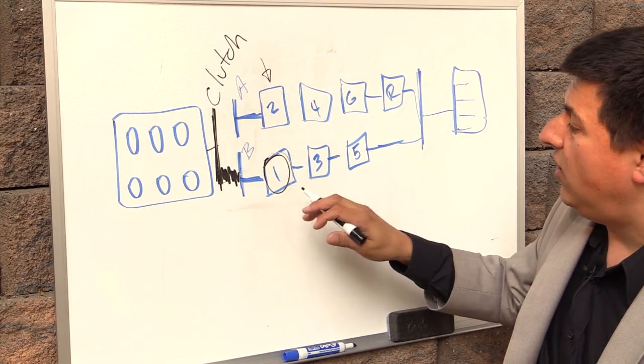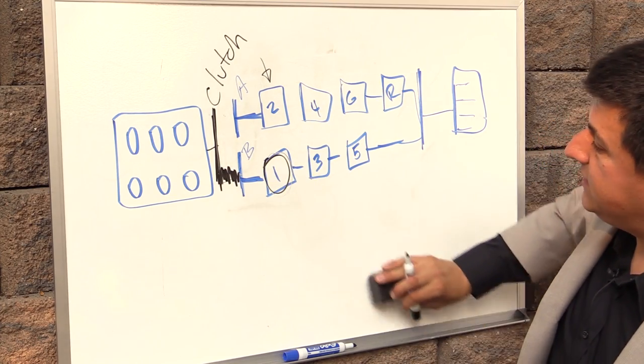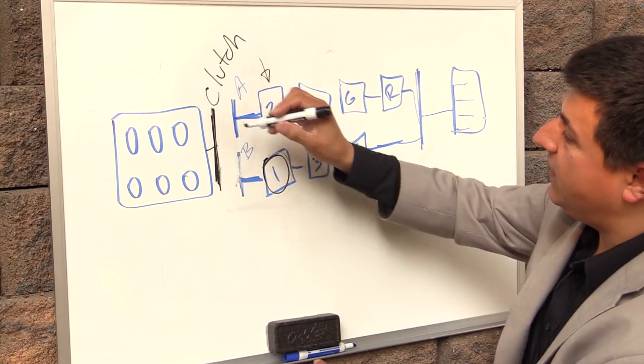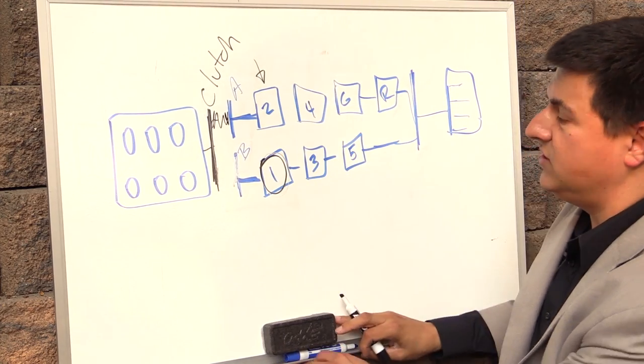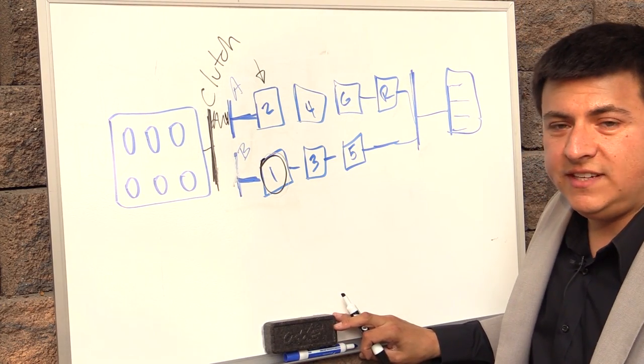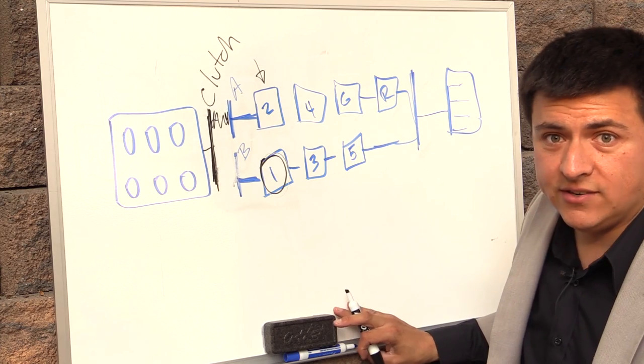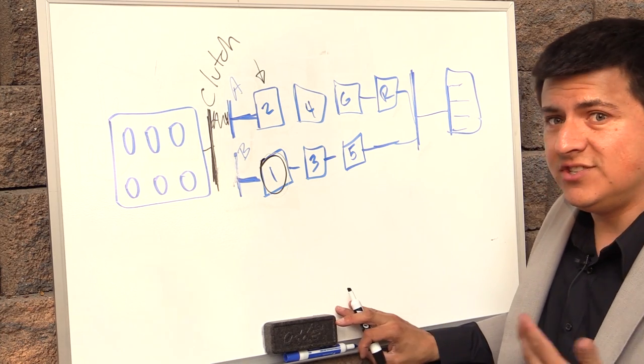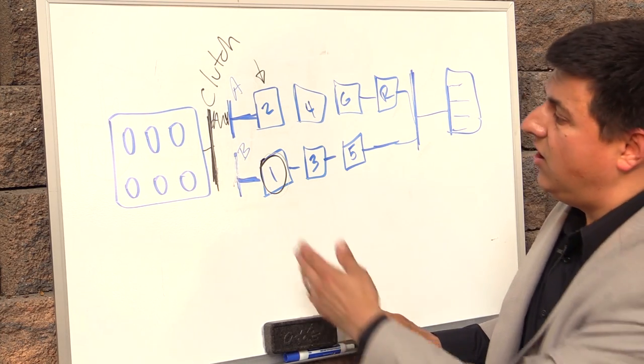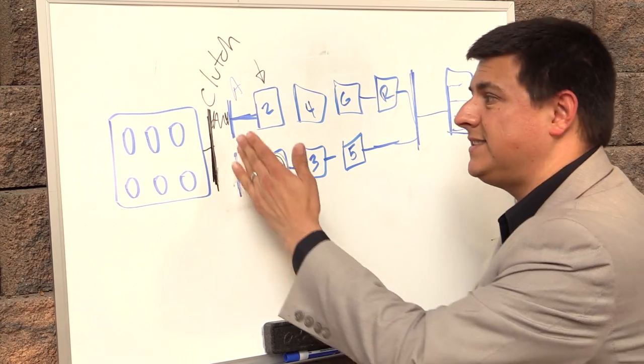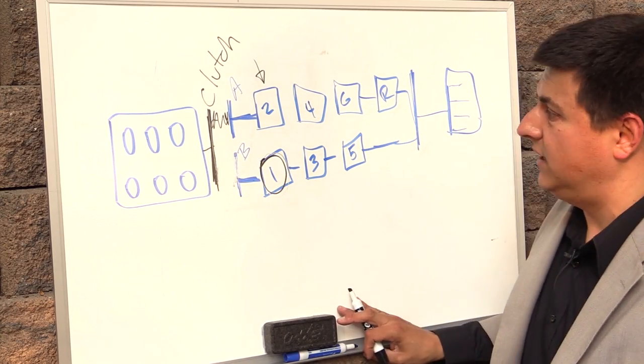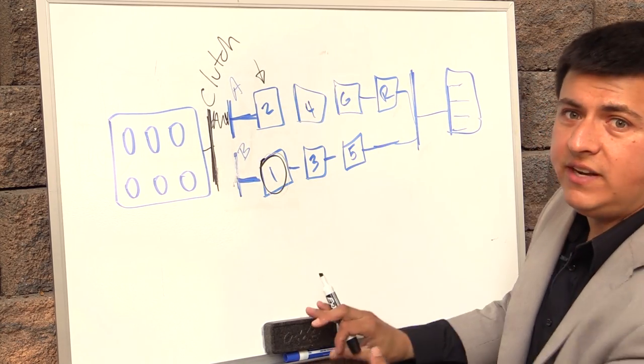So if we want second, all we have to do is disengage this clutch right here and then very quickly engage this clutch. That leaves all of the shifting to be done at a time where you're already in a gear. So you don't need to disengage the clutch, shift gears, and then re-engage the clutch. All you're doing is disengaging this clutch at the same time as you're engaging the next clutch. And that way second gear is already ready to go.